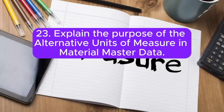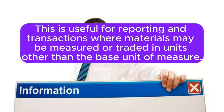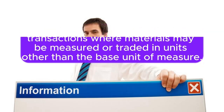Question 23: Explain the purpose of Alternative Units of Measure in Material Master data. Alternative Units of Measure in Material Master data allow for expressing quantities in different units. This is useful for reporting and transactions where materials may be measured or traded in units other than the base unit of measure.